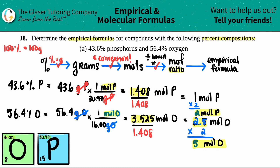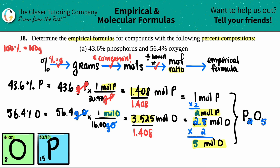Step three is done. Finally, I can write my empirical formula from the two numbers. Starting with phosphorus — I have two of them — then oxygen, and I have five of them: P₂O₅. The subscripts are two and five, and there's no whole number I can divide both by to simplify further. So this is our empirical formula and our final answer. Whenever you get a decimal, you have to correct it first before writing your empirical formula.